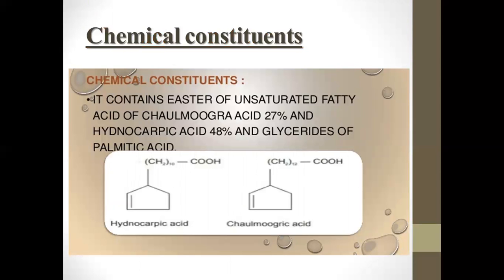Now, the chemical constituents of Chaulmoogra oil: it is a mixture of glycerides of fatty acids such as hydnocarpic acid, chaulmoogric acid, gorlic acid, oleic acid, palmitic acid, etc. Generally in Chaulmoogra oil, chaulmoogric acid is 27 percent and hydnocarpic acid is 48 percent.